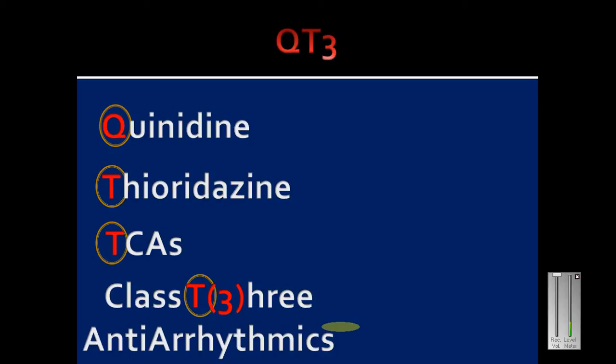That's as easy as that. You'll encounter many mnemonics randomly in the book of pharmacology. Just learn this simple mnemonic called QT3 and you'll know all the drugs that increase QT interval in a patient: quinidine, thioridazine, all tricyclic antidepressants, and class three antiarrhythmics.